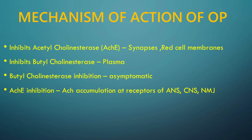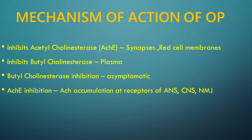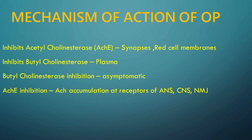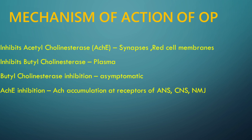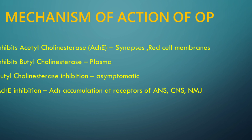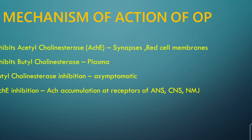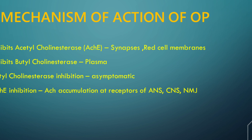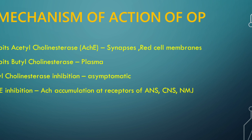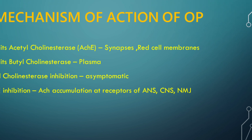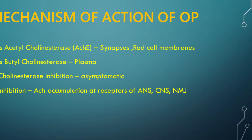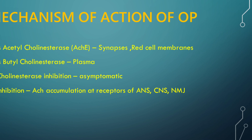Coming to the mechanism of action, organophosphates inhibit acetylcholinesterase at synapses and red cell membrane, and butyrylcholinesterase or plasma cholinesterase at plasma. Inhibition of butyrylcholinesterase is not symptomatic, but acetylcholinesterase inhibition leads to accumulation of acetylcholine at receptor sites in the synapses of the autonomic nervous system, central nervous system, and neuromuscular junction. The resultant over-stimulation and subsequent autonomic, CNS, and neuromuscular features of organophosphates are well known.